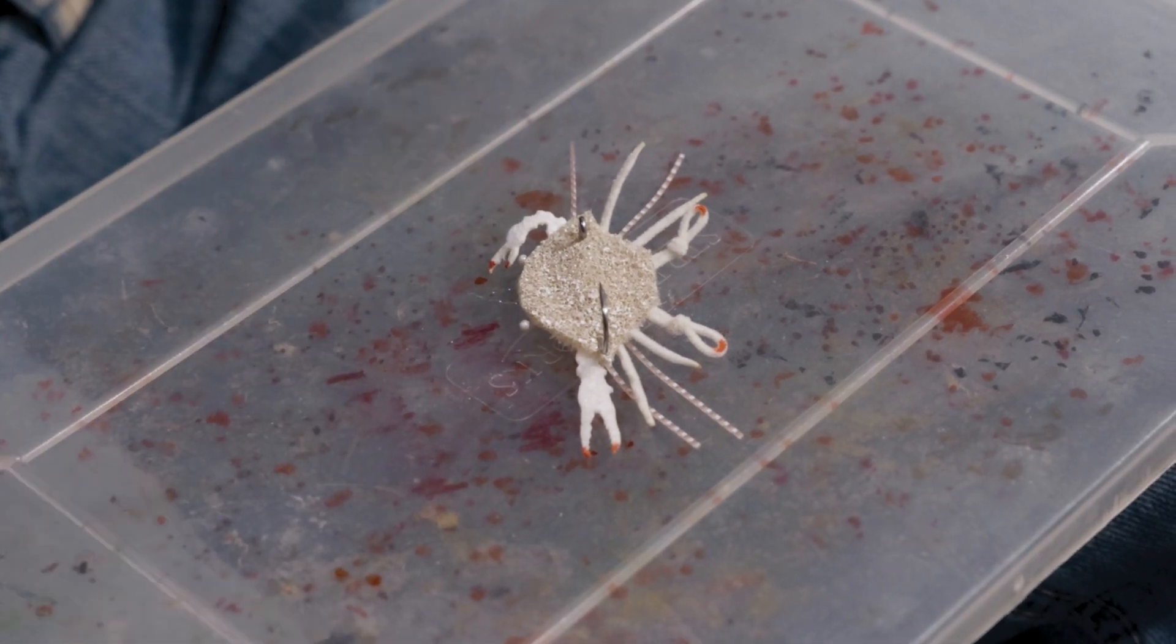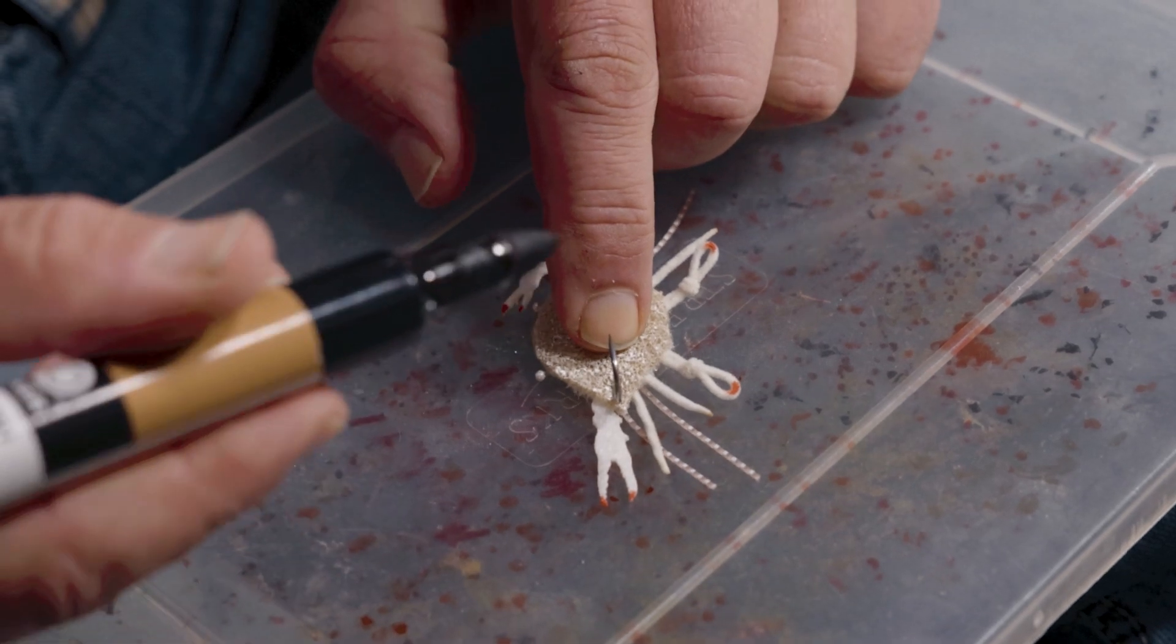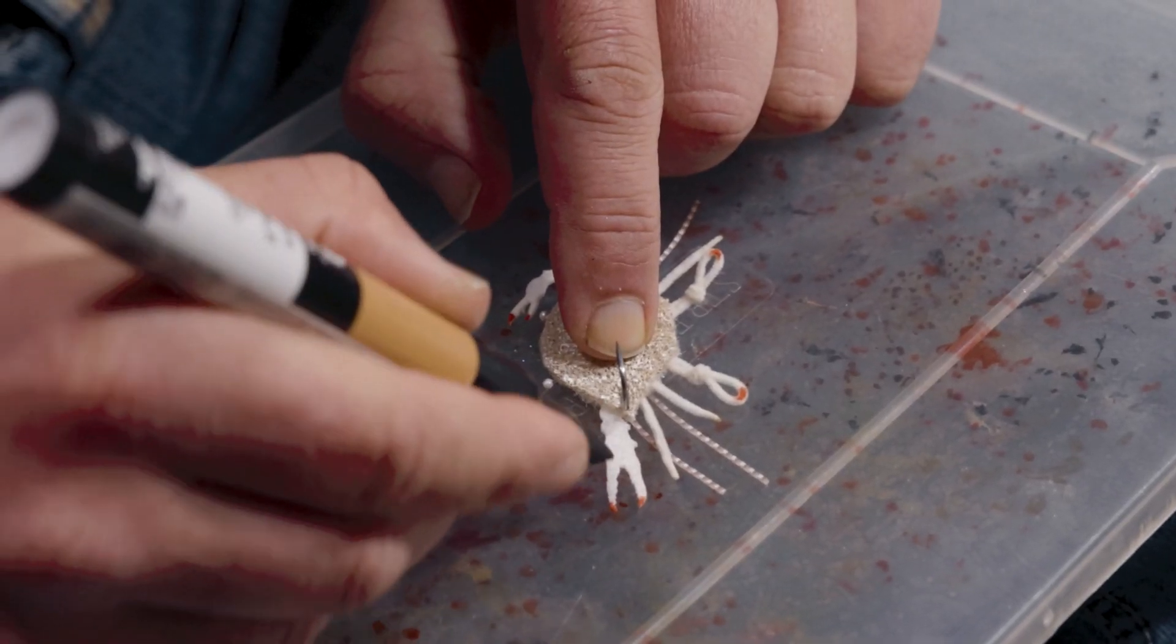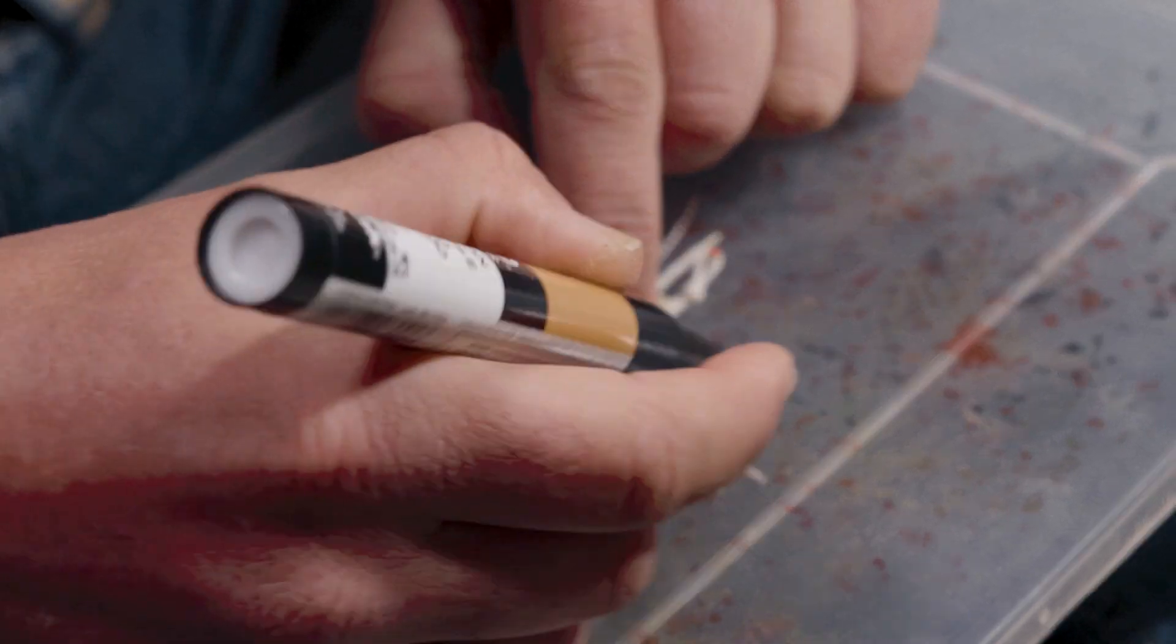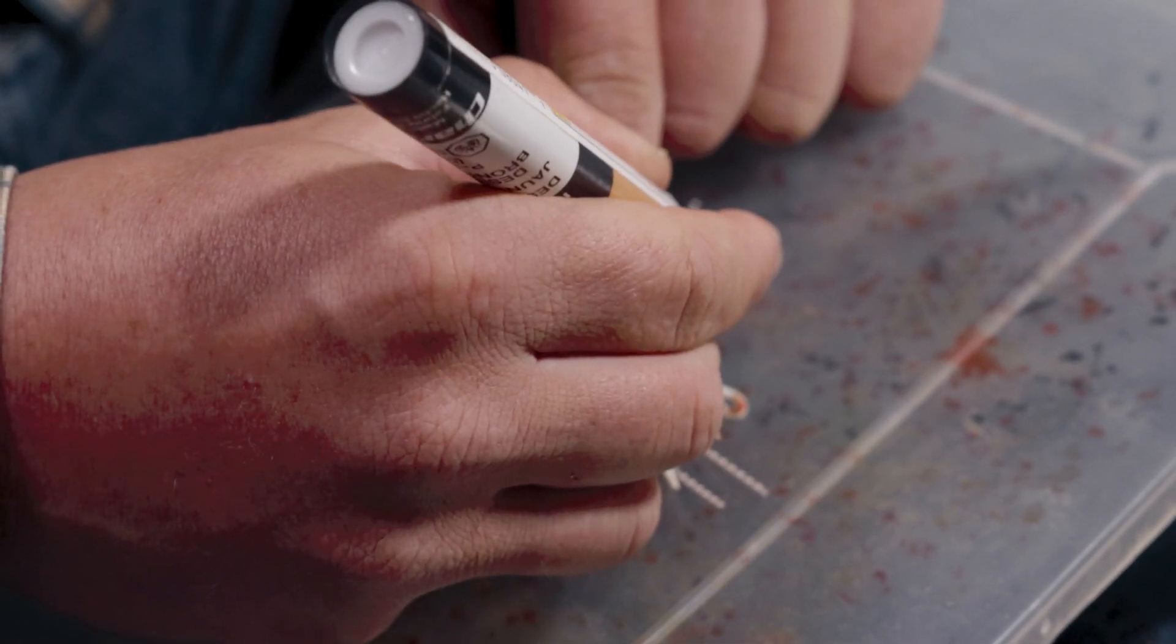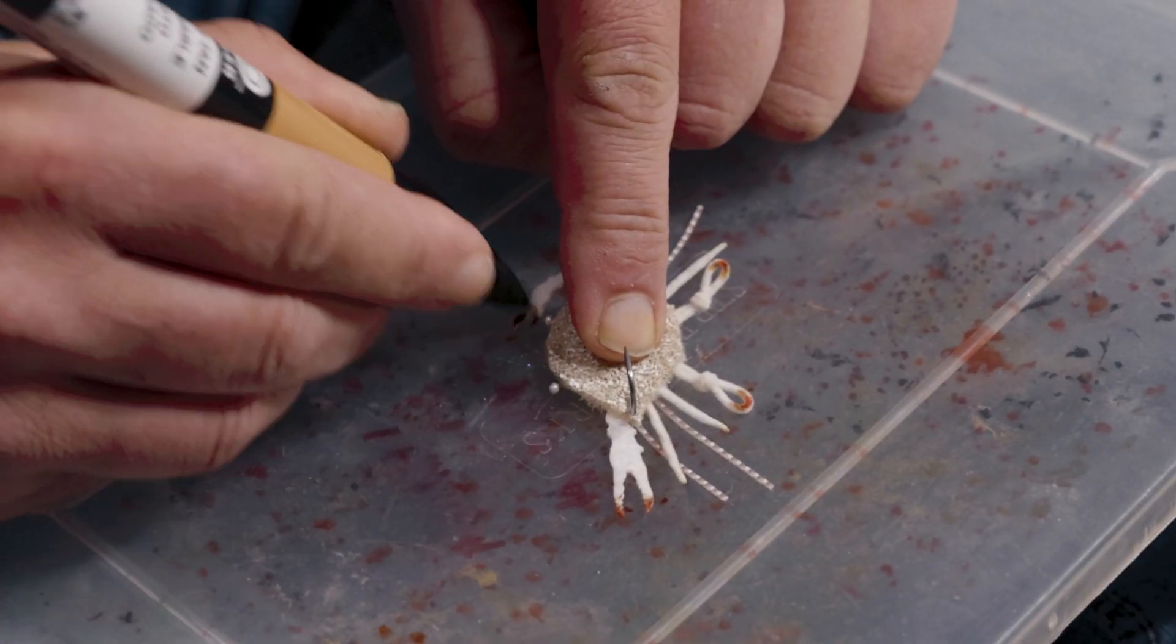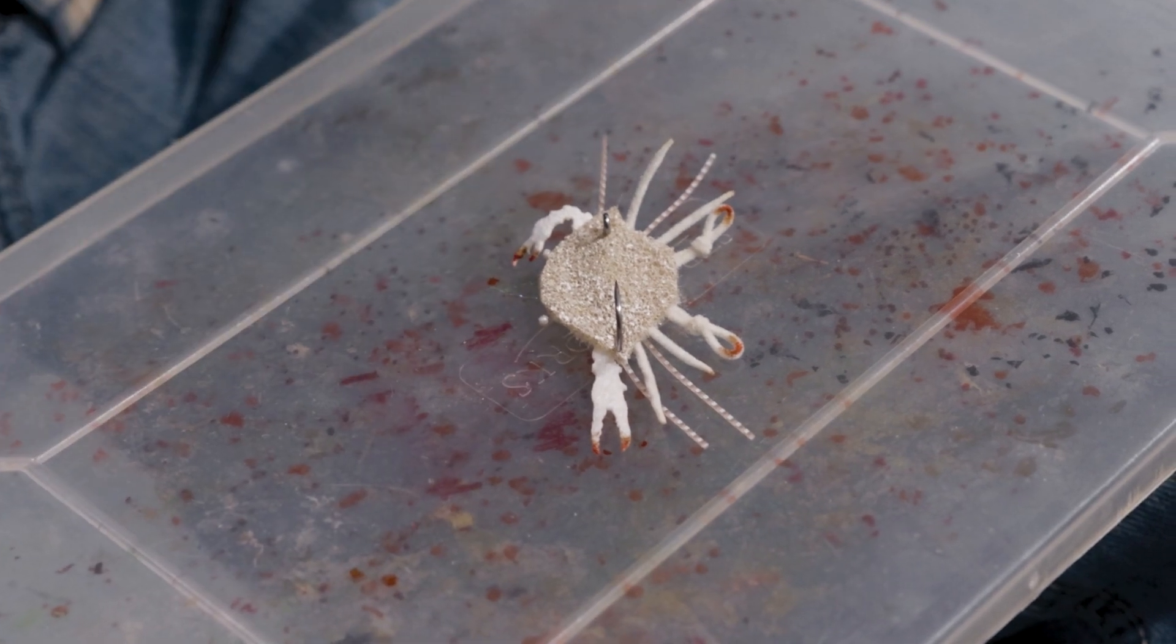And then I'm going to take a brownish color, this is a reddish brown called Desert Tan, and just tone down the brightness of that hot orange a little bit. Kind of the sky's the limit as far as what colors you want to do.